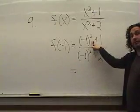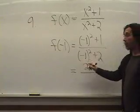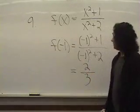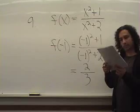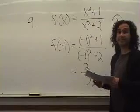Minus 1 squared is just 1, plus 1 is 2. Minus 1 squared is 1, plus 2 is 3. Or choice D.